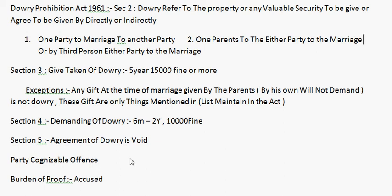After dowry offenses, it is a partially cognizable offense. Cognizable offense means koi bhi police officer kisi ko bhi without warrant arrest kar sakta hai. Lekin is Dowry Prohibition Act 1961 mein, partially cognizable offense ka topic yeh hai ki yeh cognizable offense hai — but for the purpose of investigation only.